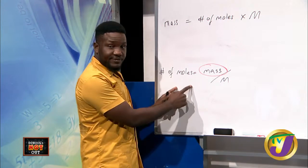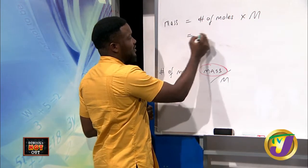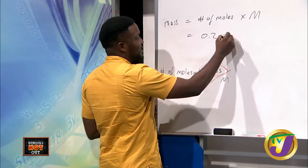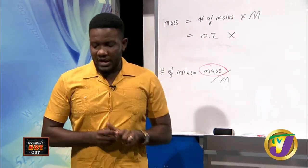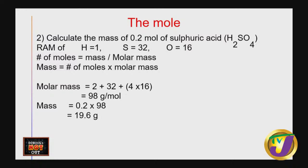For sulfuric acid H₂SO₄: hydrogen = 1 × 2 = 2, sulfur = 32 × 1 = 32, oxygen = 16 × 4 = 64. Molar mass = 98 g/mol. Using mass = n × M: 0.2 × 98 = 19.6 grams.